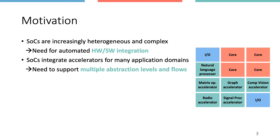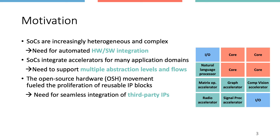Given the variety of different application domains, a truly agile flow must support specification of accelerators at different levels of abstraction, using the appropriate language to specify the design of the IP block that solves a particular problem or implements a particular algorithm. Since we're seeing a proliferation of IP blocks largely fueled by the growing open source hardware community, an agile flow must fully embrace modular design for IP reuse and provide a simple, seamless flow to integrate existing IP blocks with newly developed accelerators.